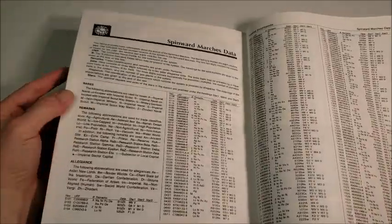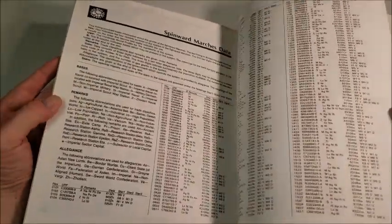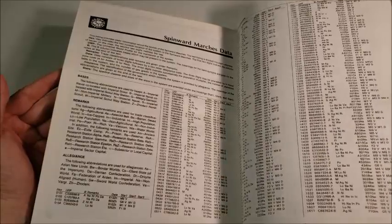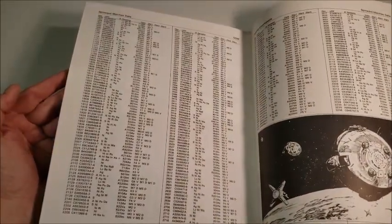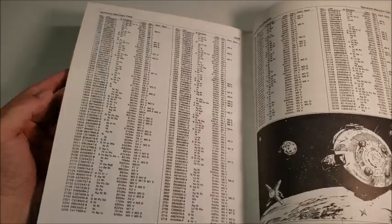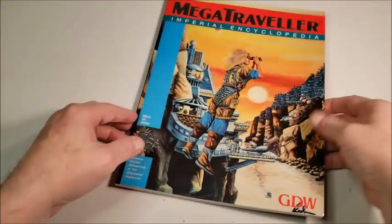And then we go to the Spinward Marches planetary data. And you get the nice Spinward Marches map inside this. And that continues on inside the cover. So this is a 96 page book and it uses the inside cover on the last page and on the first page. So very nice product.